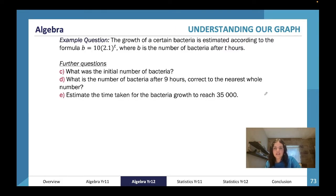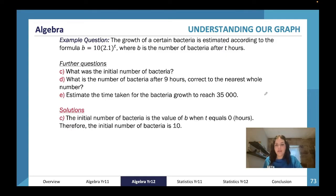We need to understand our graph. The growth of a certain bacteria is estimated after that formula. What was the initial number of bacteria? What was the number of bacteria after nine hours? How long would it take for the bacteria growth to reach 35,000? The initial number of bacteria was 10, because when t equaled zero, we already had 10.